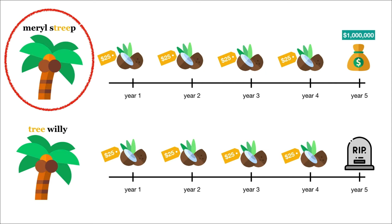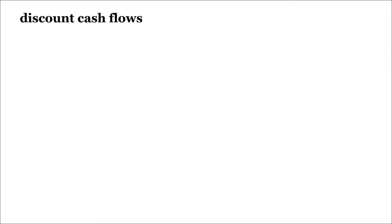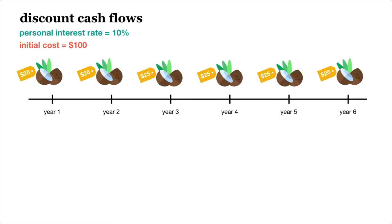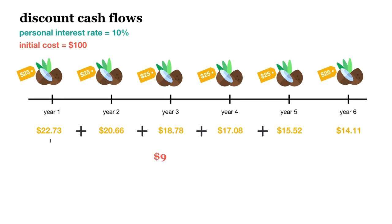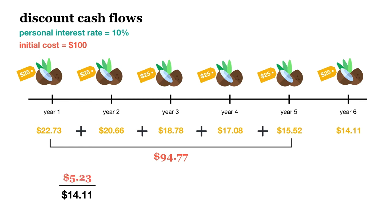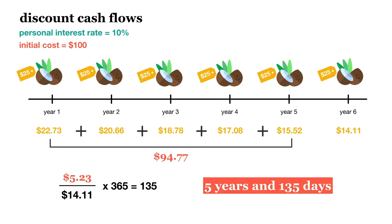Some investors have proposed a solution to the first two problems: discounting our cash flows. That way, we can factor in the time value of money and our risk. For example, if my personal interest rate is 10%, then the present value of each $25 cash flow from selling coconuts each year would look like this. After year five, I will have earned $94.77 in present value terms. Thus, I will have fully paid back my initial $100 investment during year six. Assuming we earn this money evenly throughout the year, we take the remaining amount, $5.23, divided by the total amount earned in year six, $14.11, times 365 days — so we'll recover our initial investment after five years and 135 days.